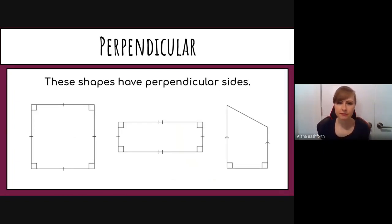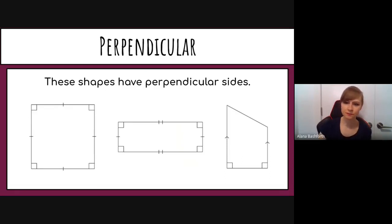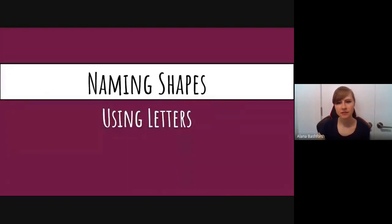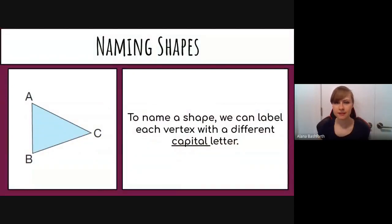Here are some examples of shapes that have perpendicular sides. The first two each have four perpendicular sides, and the last one has two. You'll also notice that some sides are the same length and some sides show parallel arrows.